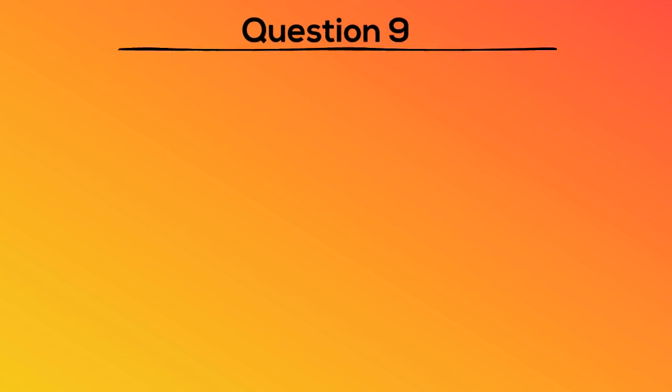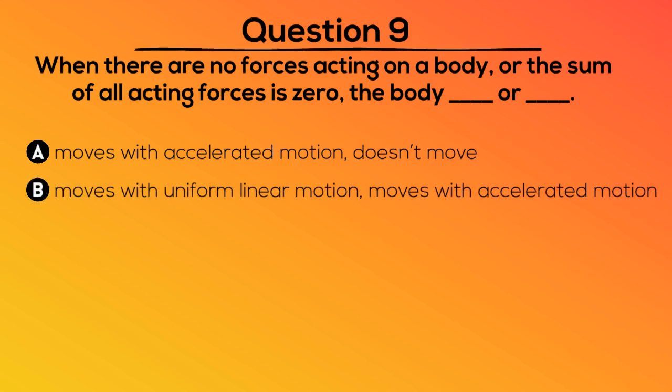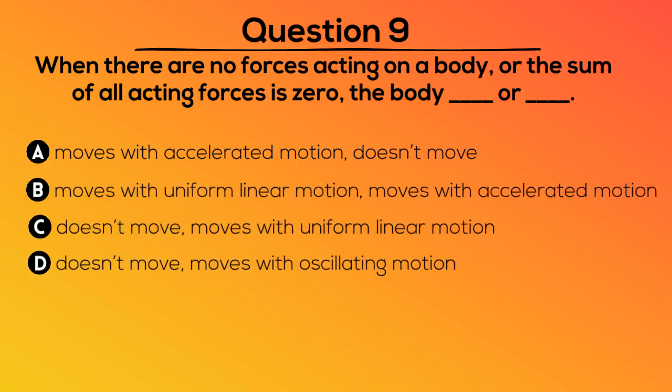Question 9. When there are no forces acting on a body, or the sum of all acting forces is zero, the body blank or blank. A. Moves with accelerated motion, doesn't move. B. Moves with uniform linear motion, moves with accelerated motion. C. Doesn't move, moves with uniform linear motion. Or D. Doesn't move, moves with oscillating motion.